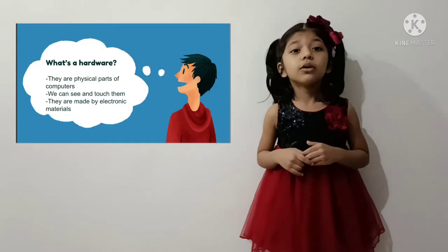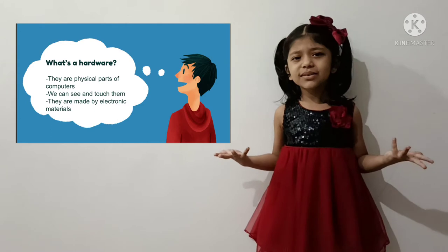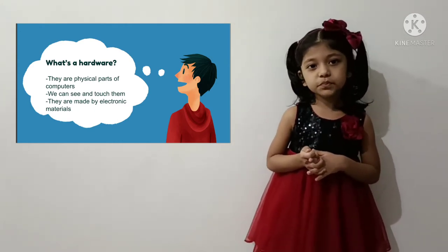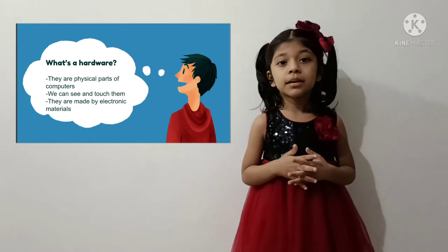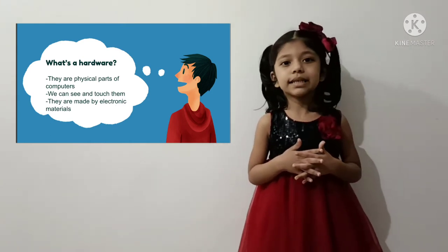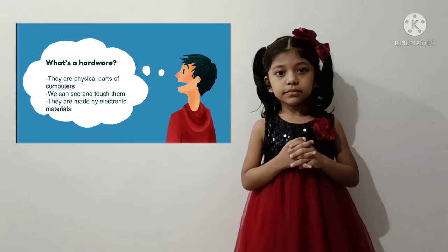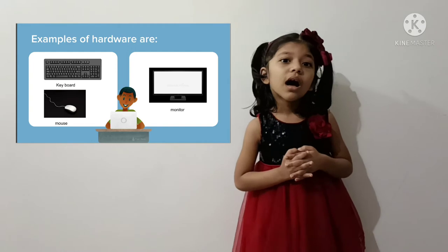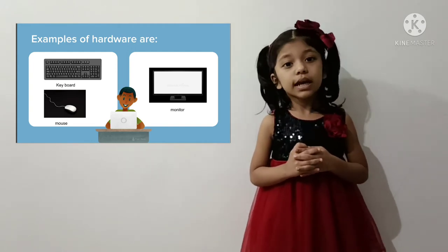Now, let's talk about hardware. What is hardware? Hardware is parts of our computer, which we can see and touch them. They are made up of electronic devices. Here are some examples of hardware: keyboard, mouse and monitor.